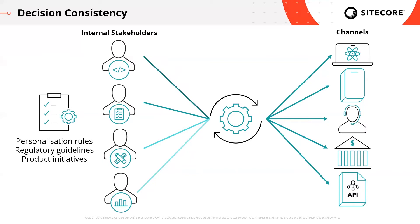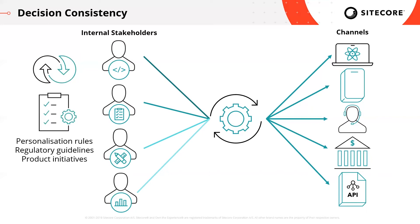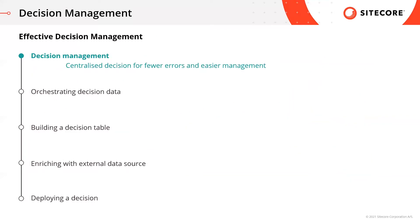This means that as our businesses learn, change, and adapt, we can be sure that it only ever happens one time consistently across all channels, mitigating any inconsistencies, lowering the cost of implementation, and reducing human error. We've seen that managing your business decisions centrally is important to improve consistency across channels, reduce human error, and lower the cost of implementation and maintenance. But how exactly is this achieved with Sitecore technology?